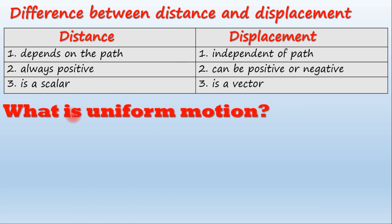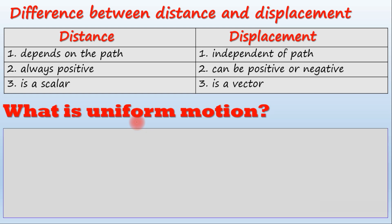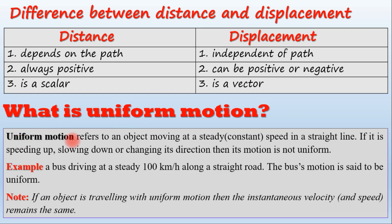What is uniform motion? Uniform motion refers to an object moving at a steady or constant speed in a straight line.